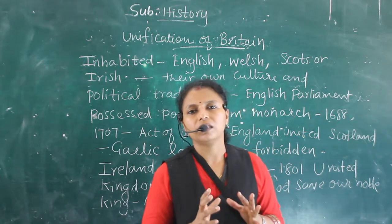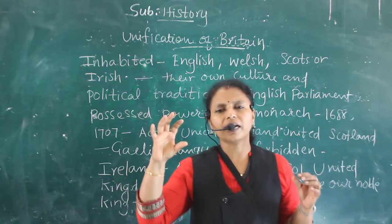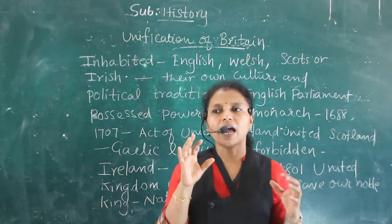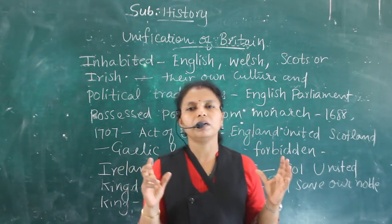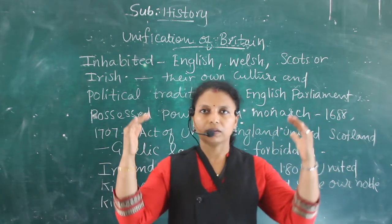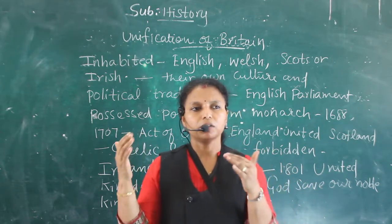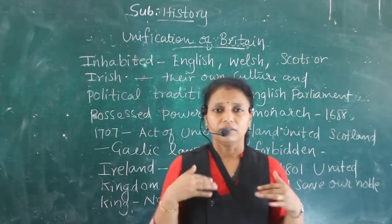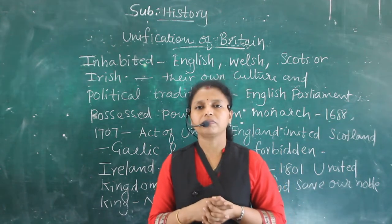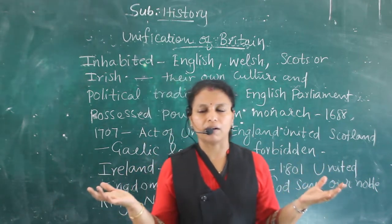Next we have to study about allegories. Allegories means the abstract ideas used to represent the nation. To develop or create a sense of collective belonging, nations used female figures as allegories. France used Marianne as the female figure representing the French nation. Similarly, Germany used a female figure called Germania to represent the German nation.